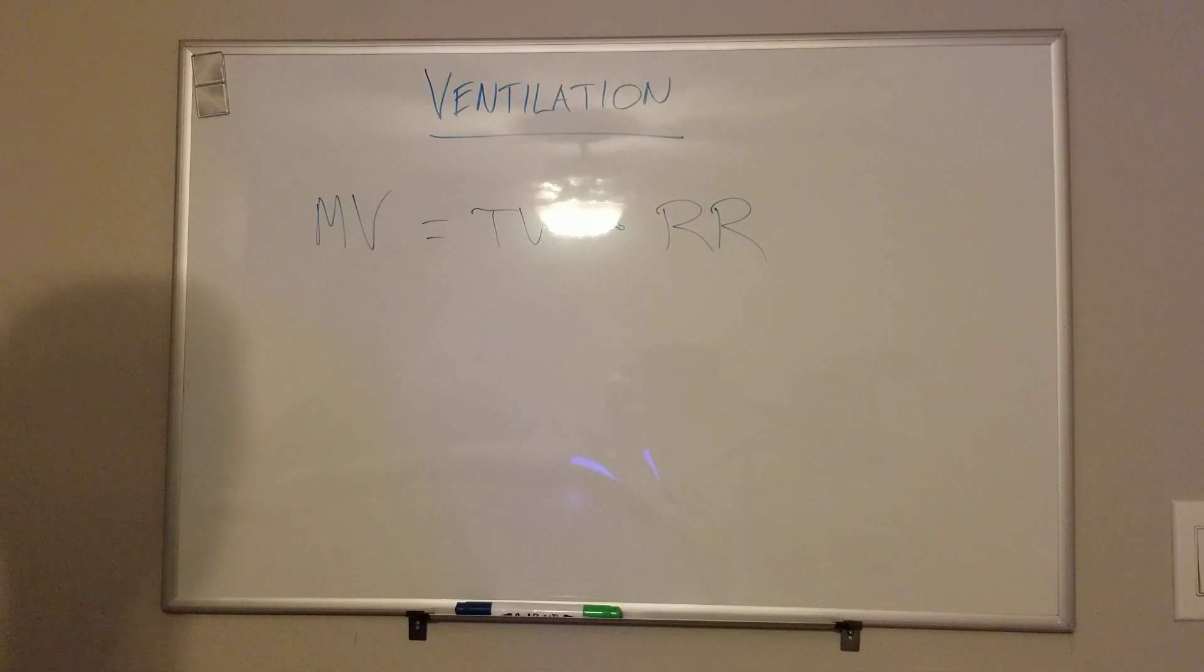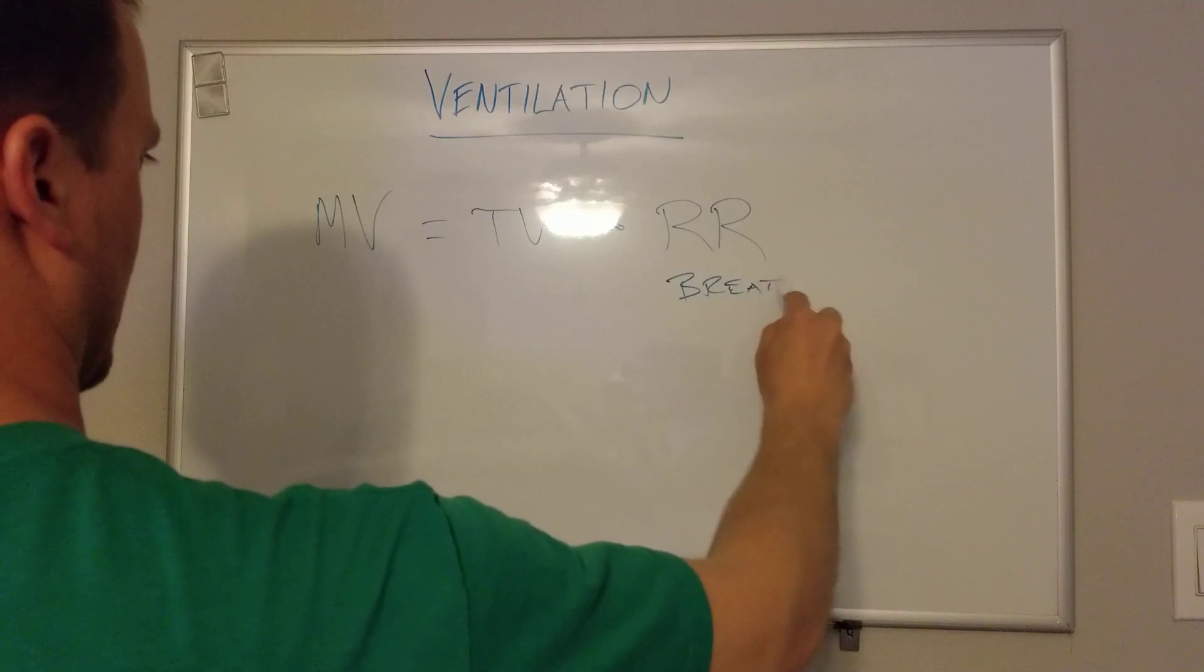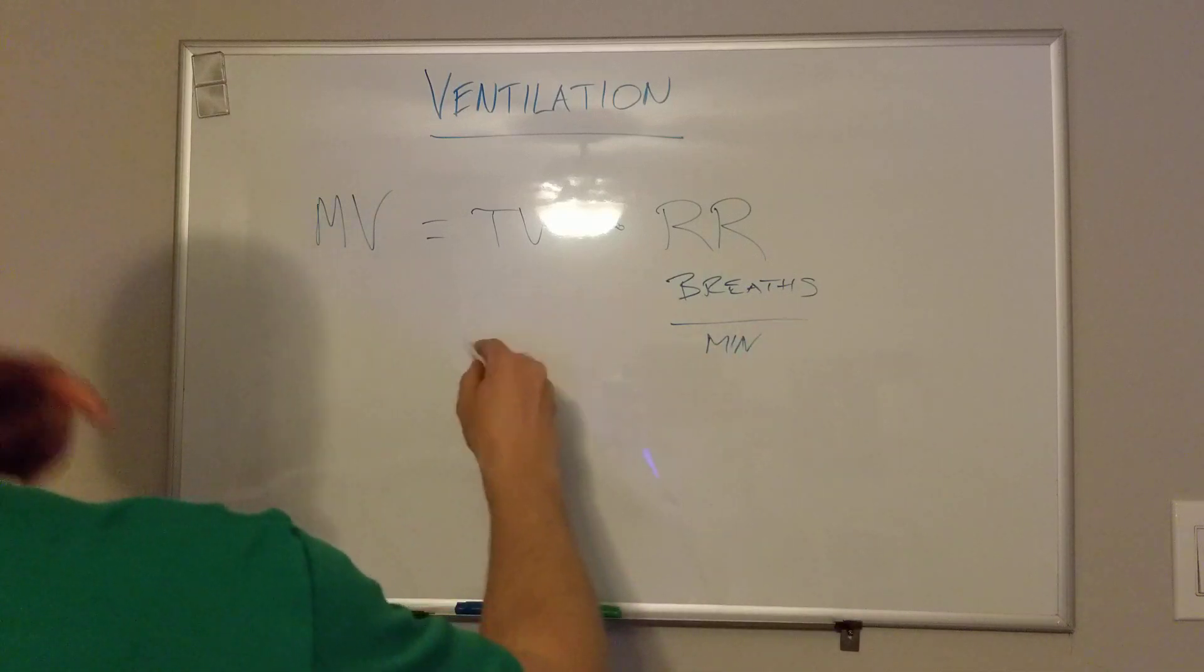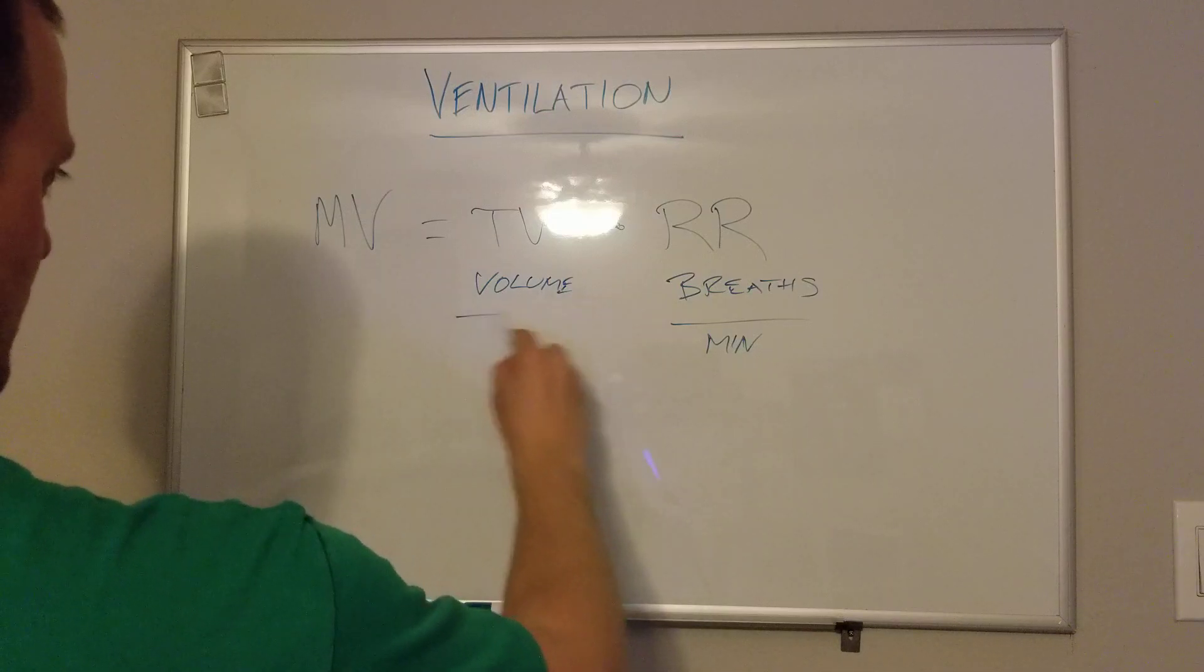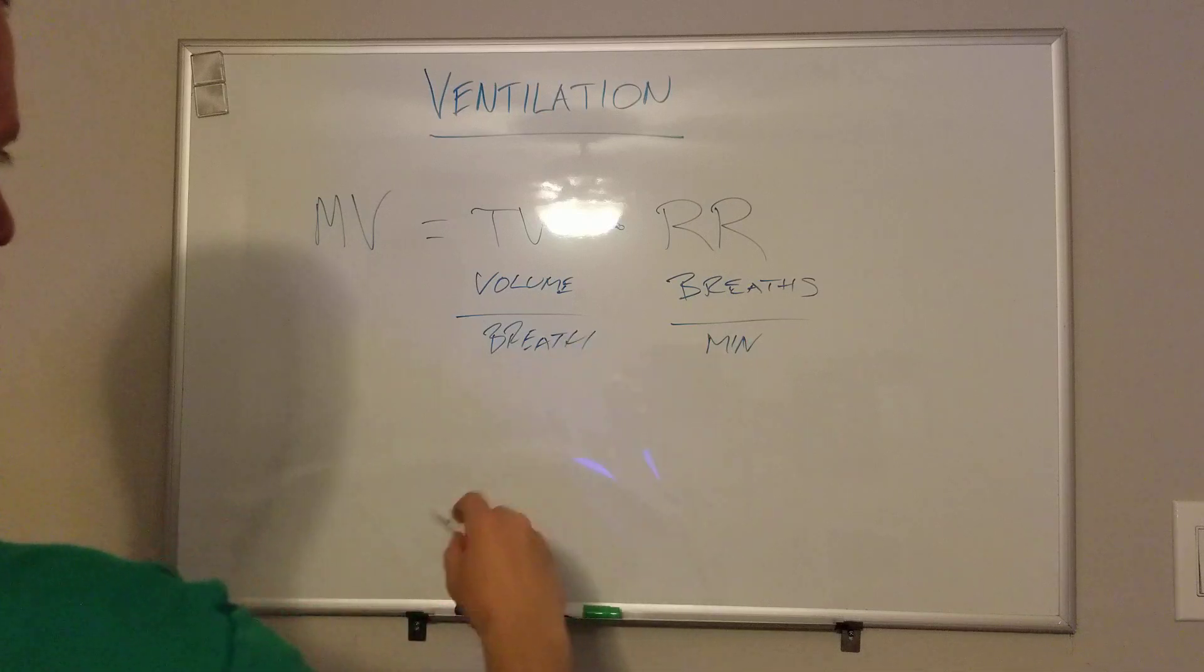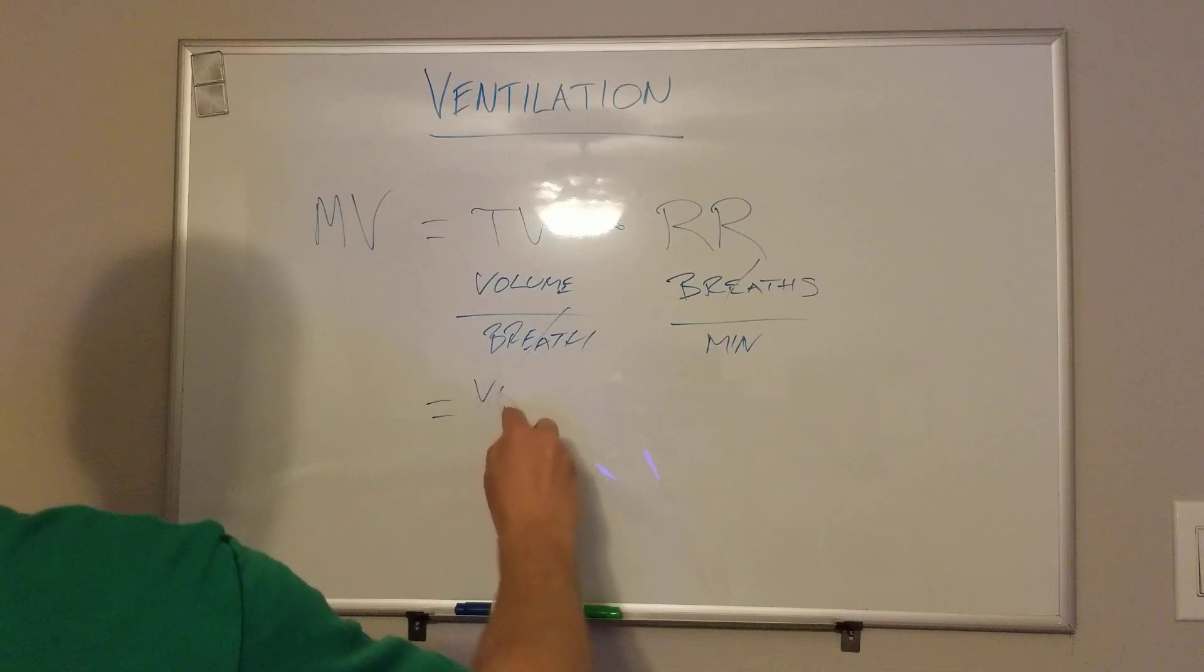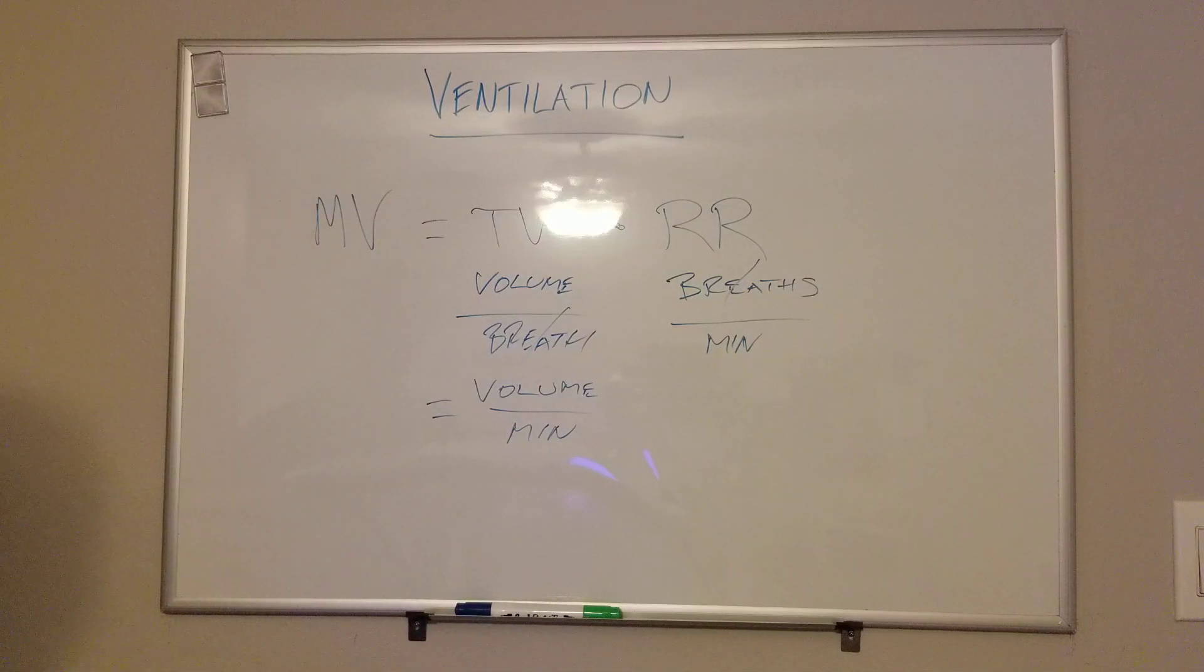If you put their units down, it's breaths per minute, and then this is volume, which can be in milliliters or liters per breath. When you multiply these, you'll cancel out the breaths. So eventually you'll have your minute ventilation, which is volume per minute. The minute ventilation would be five liters per minute or whatever.